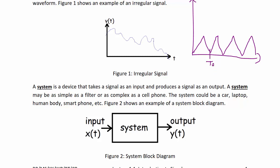A system is a device that takes a signal as an input and produces a signal as an output. A system may be as simple as a filter or as complex as a cell phone. The system could be a car, laptop, the human body, smartphone, etc. Figure 2 shows an example of a system block diagram. We will use this a lot in this course, and you will also see it a lot in the follow-on course, Control Systems.